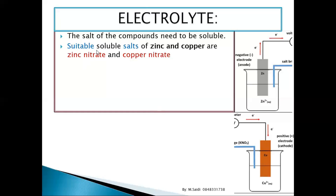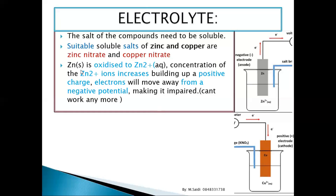Zinc is oxidized to zinc ions (Zn²⁺), and the concentration of zinc ions increases. Now, this is very important regarding the salt bridge. As zinc is oxidized to Zn²⁺, the concentration of Zn²⁺ increases, building up a positive charge. The concentration of zinc ions increases because the zinc dissolves here, and the electrons move away from the negative terminal.